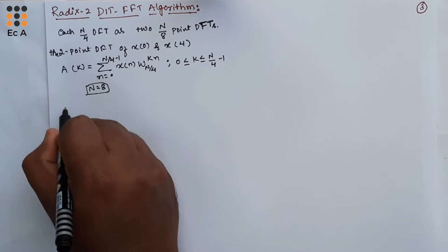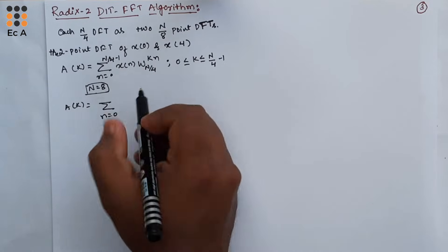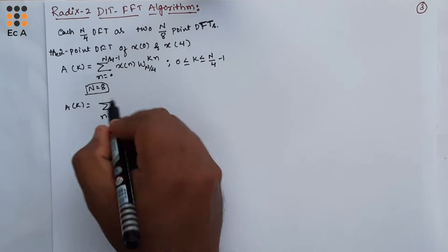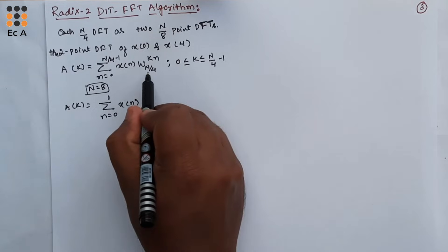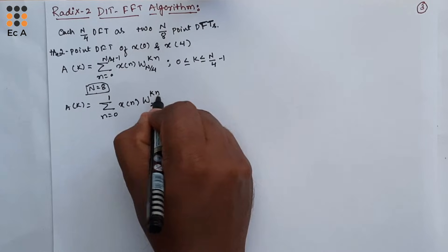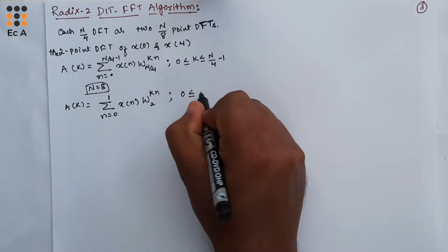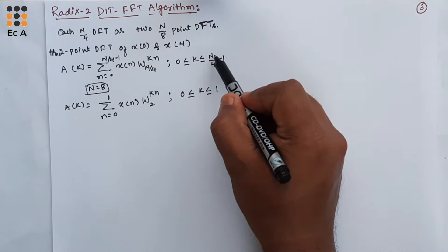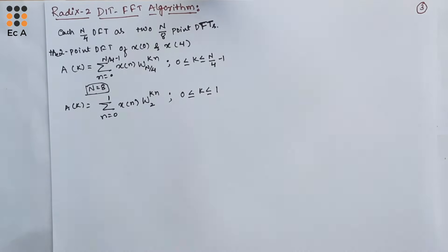If we take N equal to 8, we can write the above equation as A(k) equal to summation of n from 0 to 1 of x(n) times W_2^{kn}, for k ranging from 0 to 1. Here, 8/4 equals 2, and 2 minus 1 equals 1.